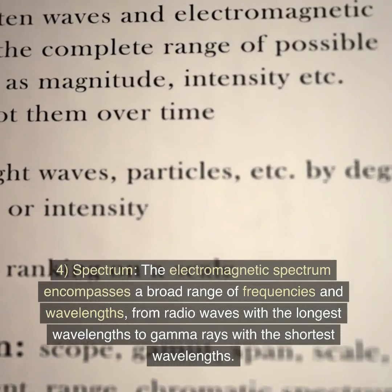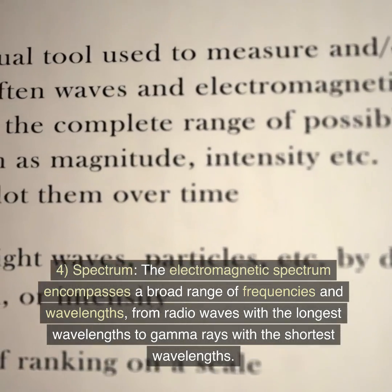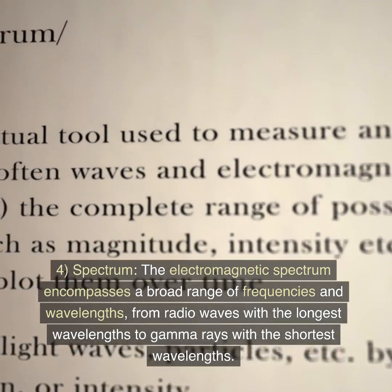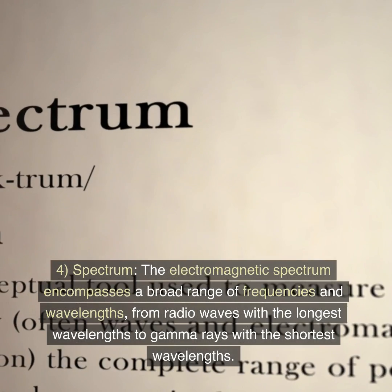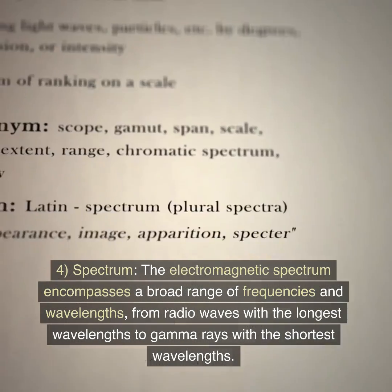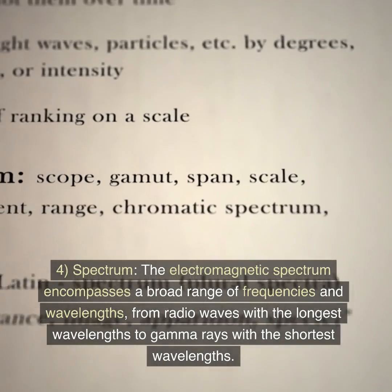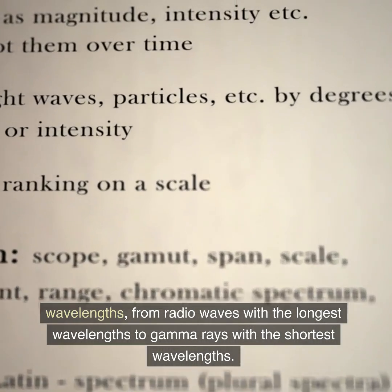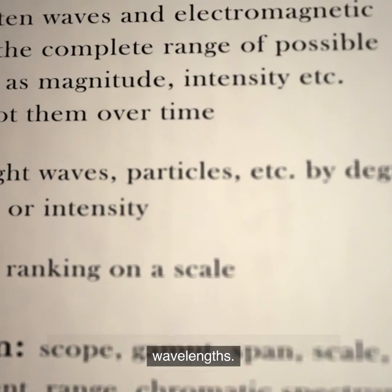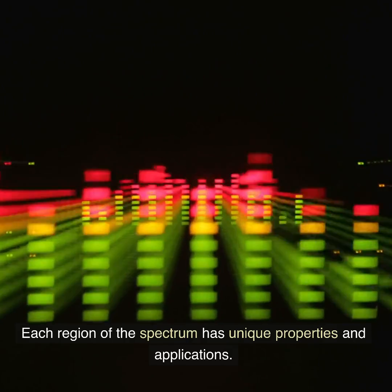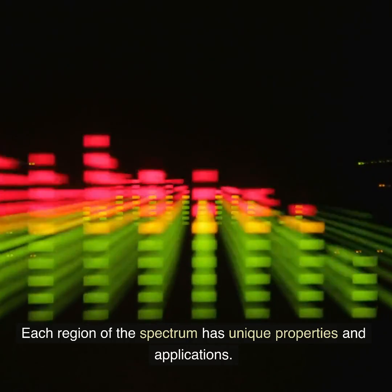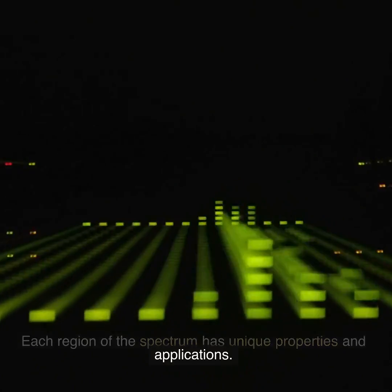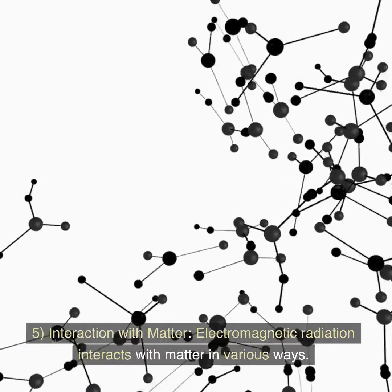Four: spectrum. The electromagnetic spectrum encompasses a broad range of frequencies and wavelengths, from radio waves with the longest wavelengths to gamma rays with the shortest wavelengths. Each region of the spectrum has unique properties and applications.